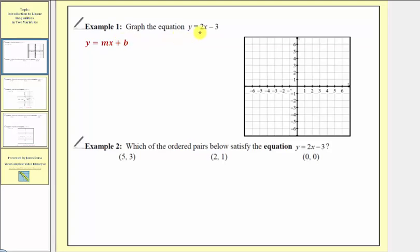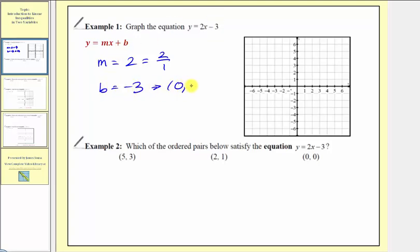Example one: we're asked to graph the equation y equals two x minus three. Notice how m, which is the slope, equals two, which we'll write as two over one, and b, the vertical intercept, is equal to negative three, which would be the ordered pair zero comma negative three.